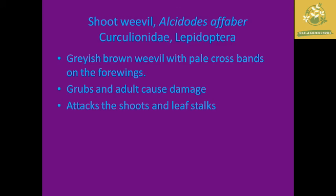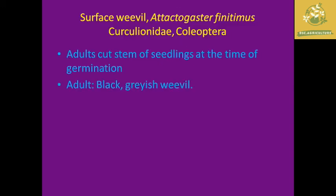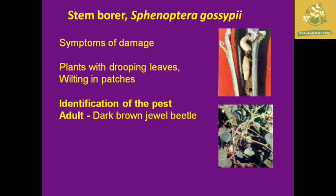The shoot weevil's scientific name is Alcidodes fabricii, family Curculionidae, order Coleoptera. It has a grayish-brown weevil with pale cross bands on the forewings; both grub and adult cause damage by attacking shoots and leaf stalks. The surface weevil's scientific name is Atetogaster finitimus, family Curculionidae, order Coleoptera; the adult cuts stems on seedlings at germination and is black-grayish in color. Timborus has the scientific name Sphenoptera gossypii; symptom of damage includes drooping leaves and wilting in patches; the adult is a dark-brown jewel beetle.